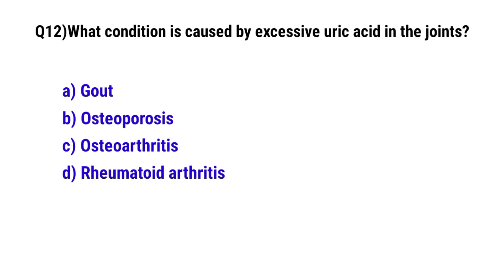Question No. 12: Which condition is caused by excessive uric acid in the joints? The correct option is A: Gout.